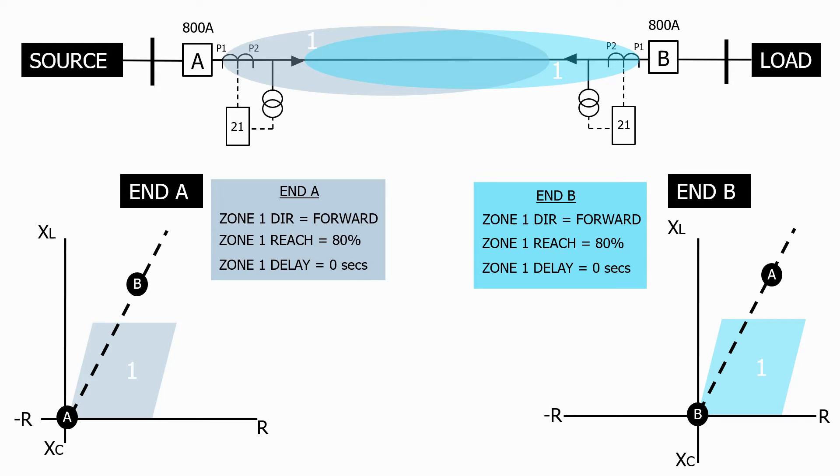Let's now energize the feeder. As we can see at end A the load characteristic is well outside the zone 1 protection coverage. At end B the load current is flowing in the reverse direction, so the load characteristic appears in quadrant 3 of the impedance graph.